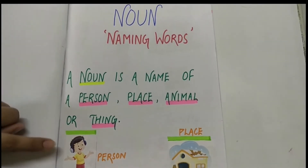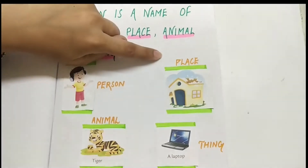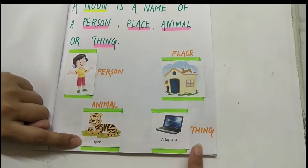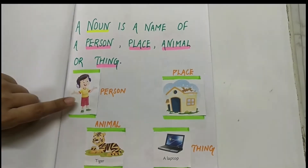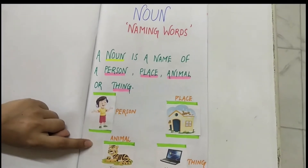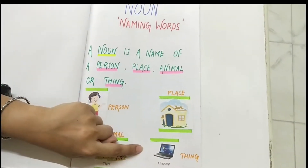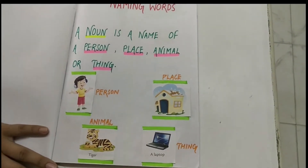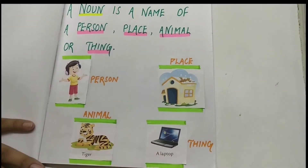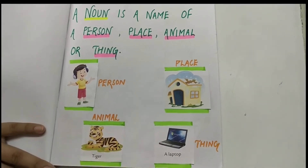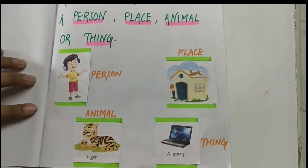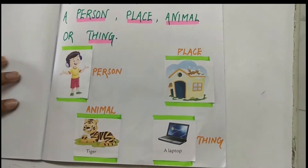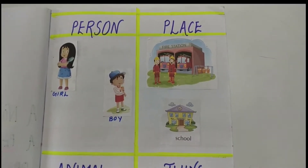For example, in person you can say 'boy,' place is 'house,' animal is 'tiger,' and thing is 'laptop.' Person and animal are living things. Place and things are non-living things. Living things means they can breathe. Non-living things are those who cannot breathe.